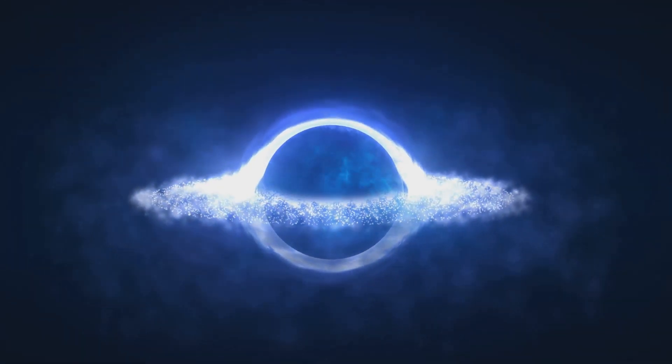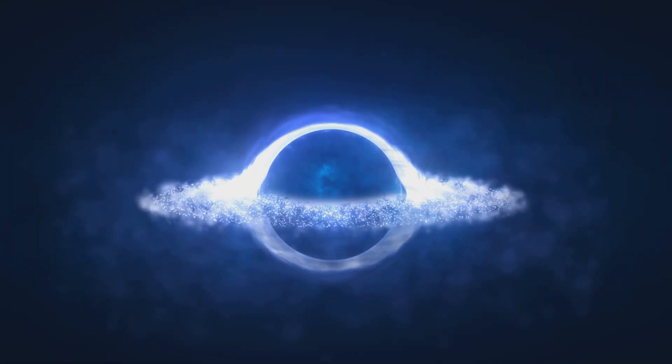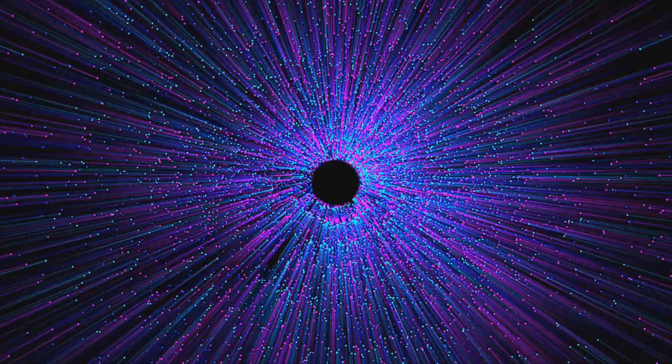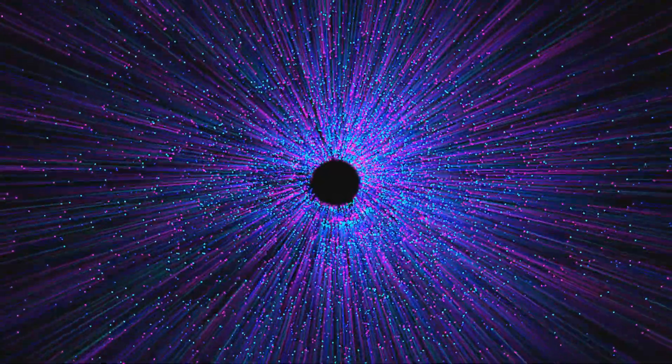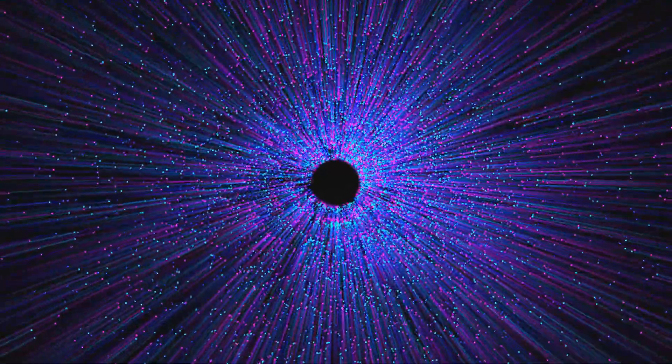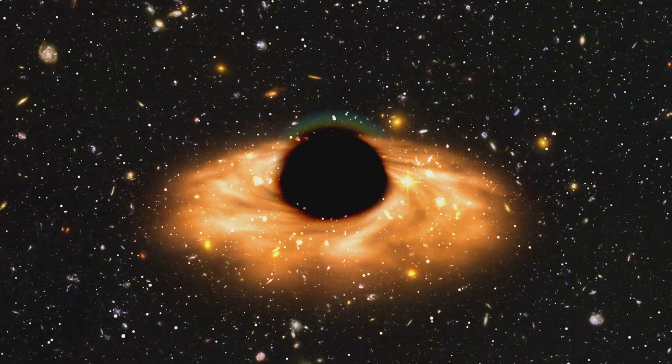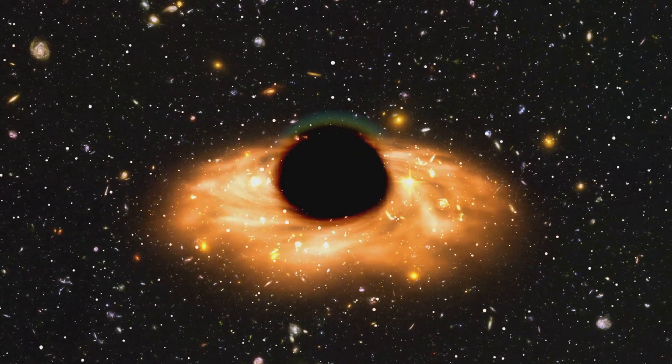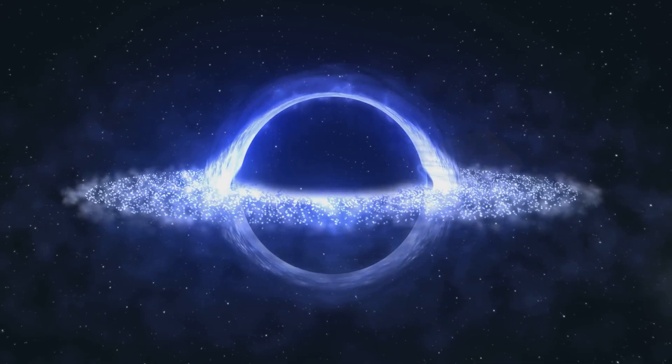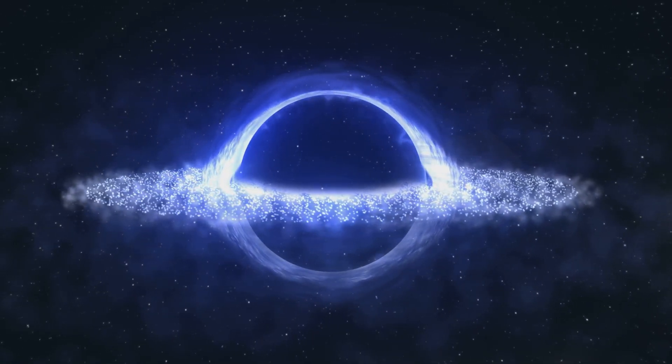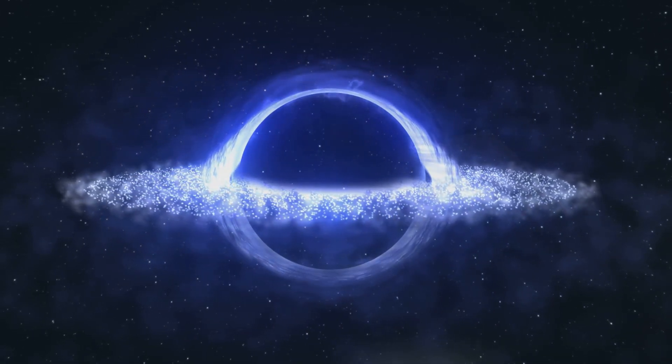In the 1970s, physicist Stephen Hawking made a groundbreaking discovery. He theorized that black holes emit faint radiation due to quantum effects near the event horizon. This radiation, known as Hawking radiation, is incredibly faint but has profound implications. Over vast periods, Hawking radiation can cause a black hole to lose mass and eventually evaporate.